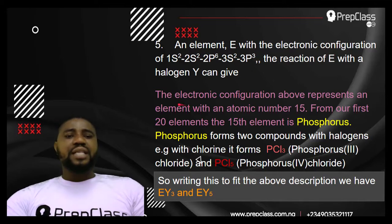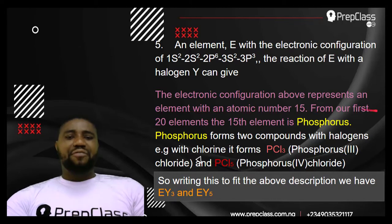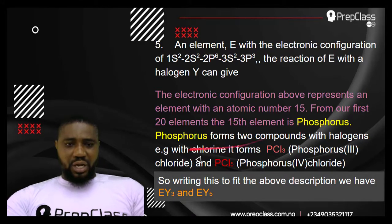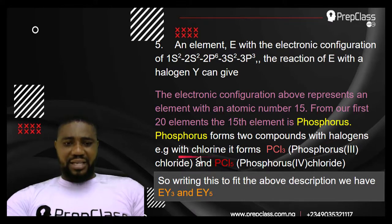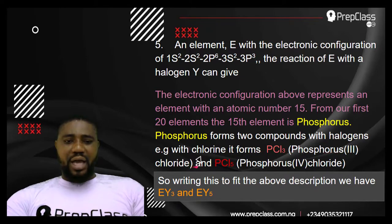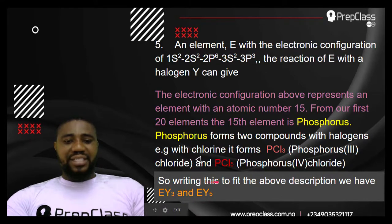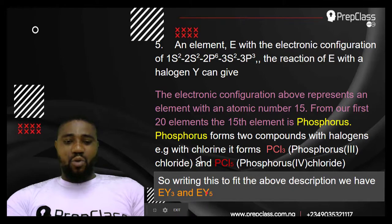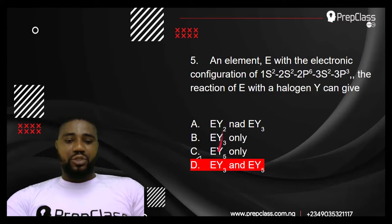The electronic configuration represents an element with an atomic number of 15. From the first 20 elements, the 15th element is phosphorus. Phosphorus forms two compounds with halogens such as chlorine: PCl₃ (phosphorus trichloride) and PCl₅ (phosphorus pentachloride). Written in the question's notation using E and Y, these become EY₃ and EY₅.